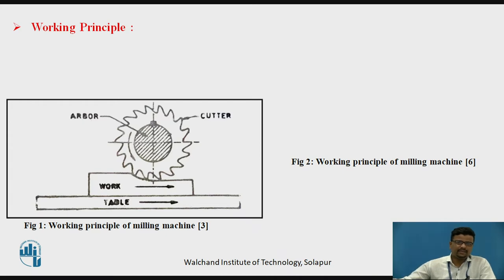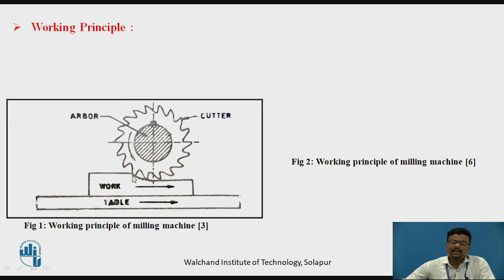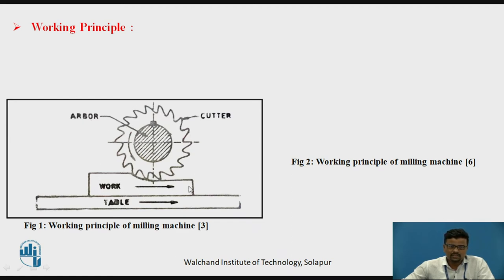This is the working principle. Here you can see the milling cutter that is mounted on the arbor, which is keyed with the help of a square or maybe a rectangular key. This is the work table, which can have horizontal direction movement. On the work table, the work piece can be mounted. Whenever there is a relative motion between the milling cutter and the work piece, there will be the chip removal process. The direction of rotation of the milling cutter is the same as the feed or movement of the work piece — both moving in the anticlockwise direction — so the movement is in the same direction.